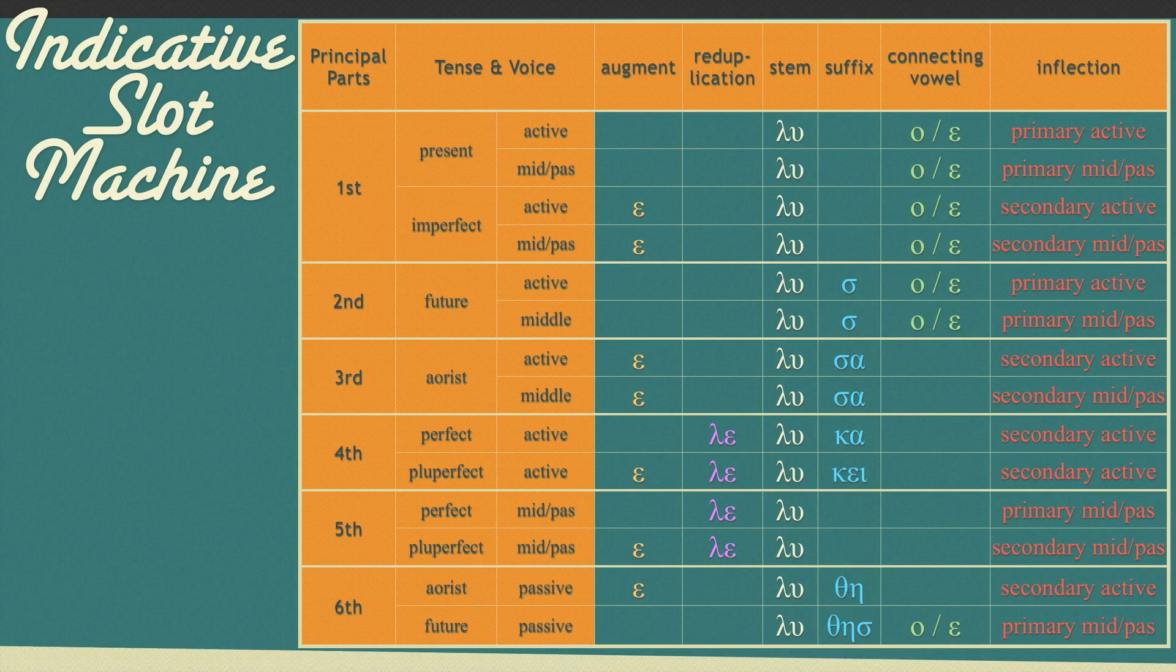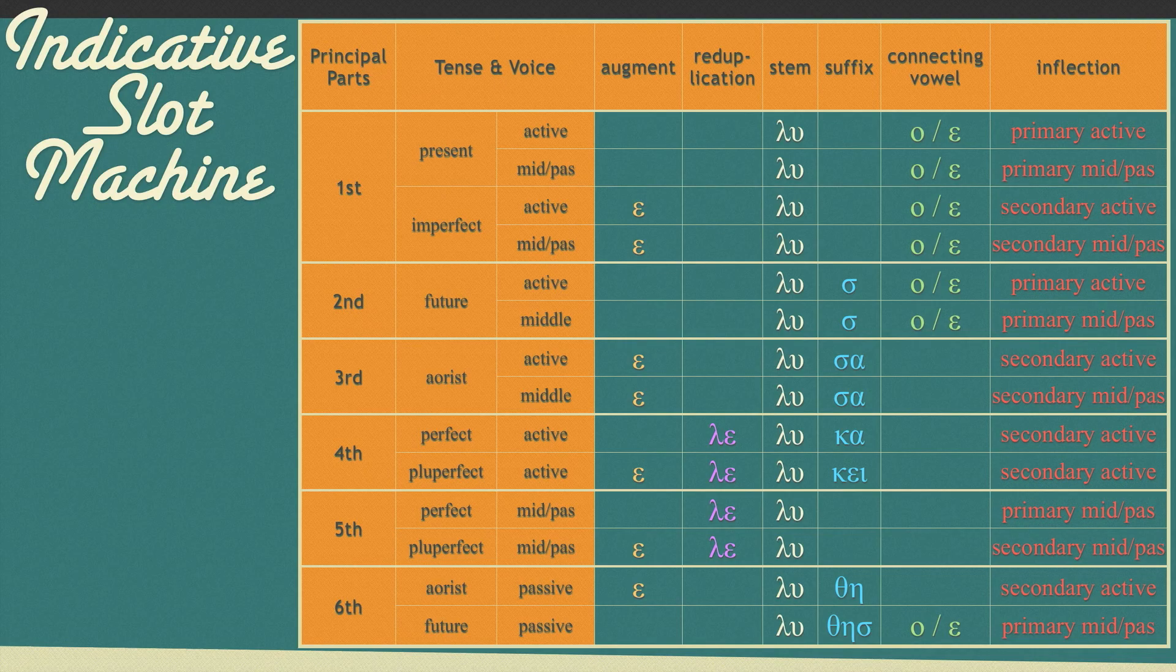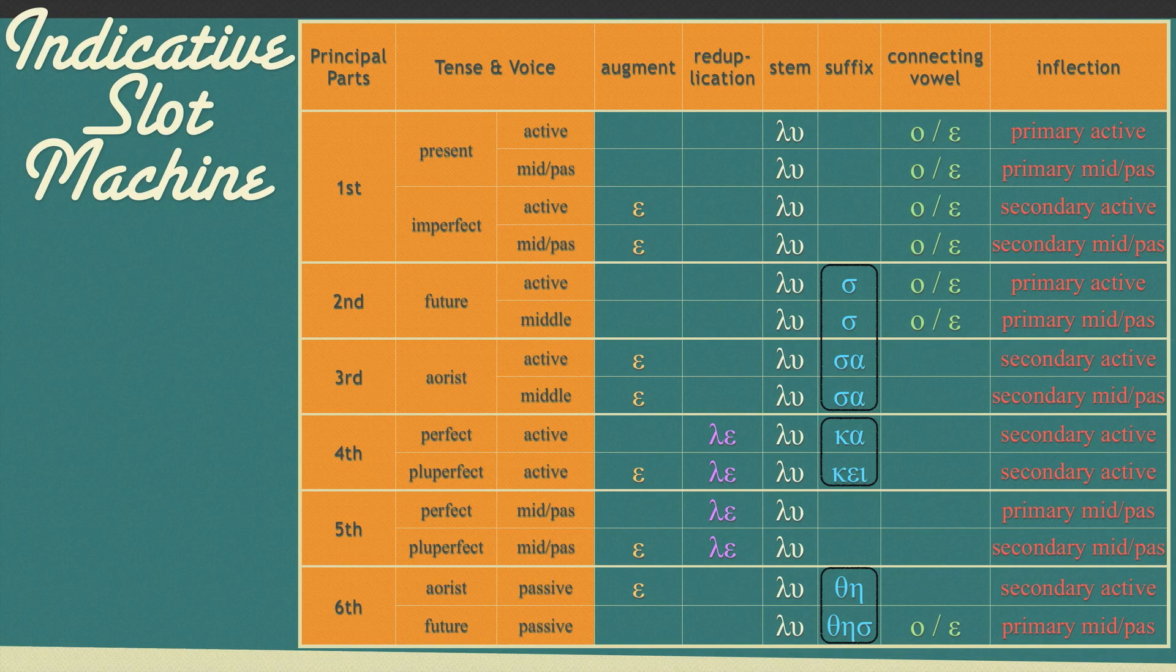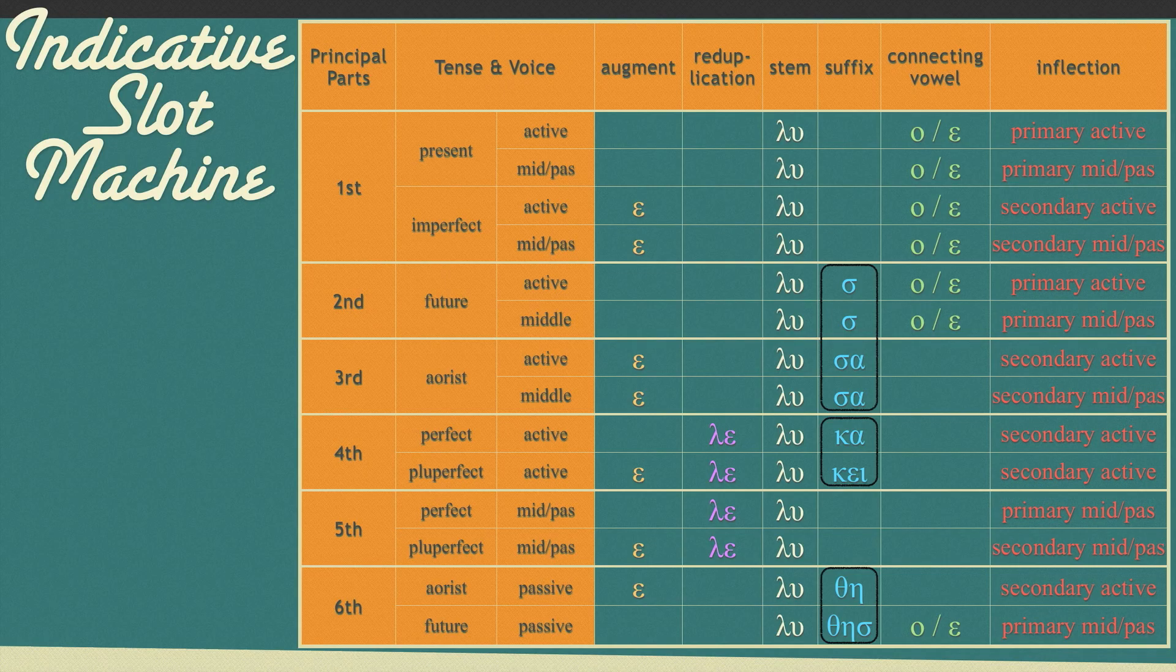Looking at these suffixes, hopefully you recognize some of our problem consonants. Particularly the sinister sigma and the two copycats, kappa and theta. If the stem of a particular verb is a liquid letter, sigmas will drop off. If a verb stem ends in a stop consonant, we will have consonant interactions in all of these suffixes. Again, with trusty Lua, we won't see these problems.